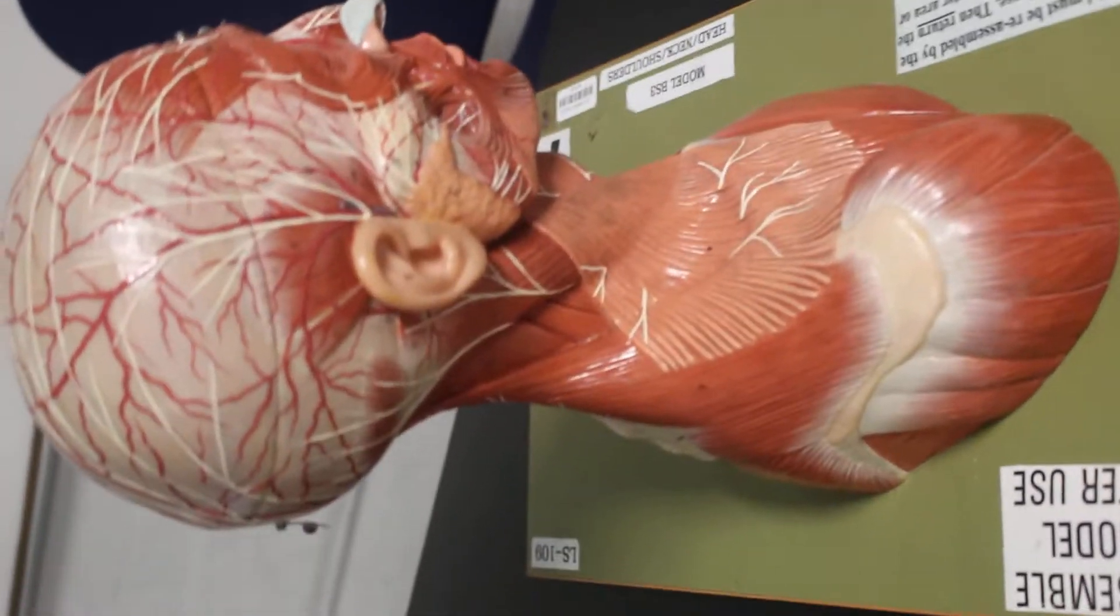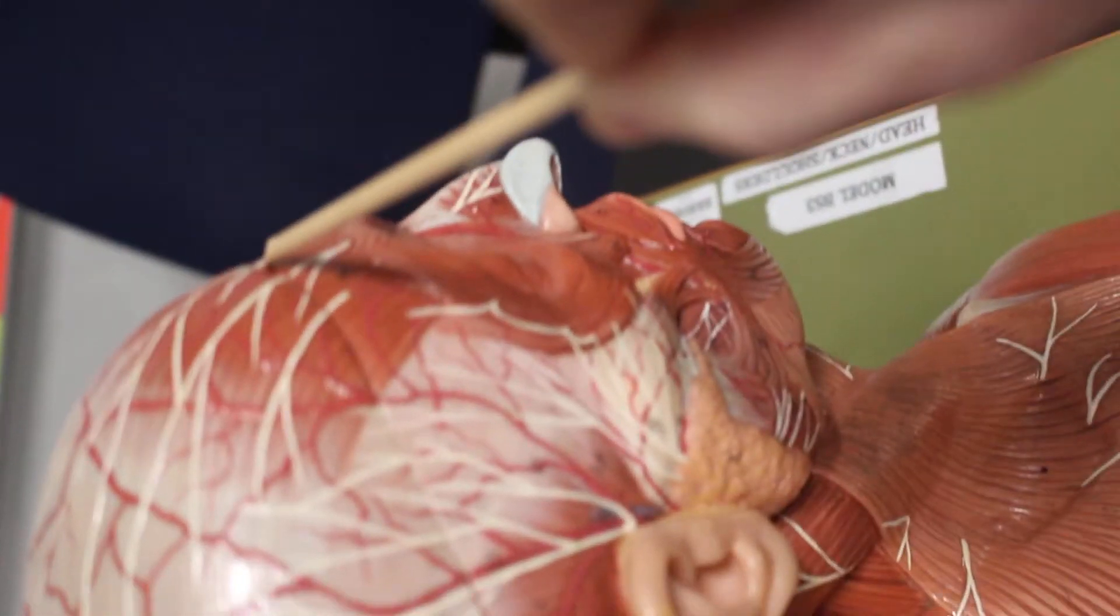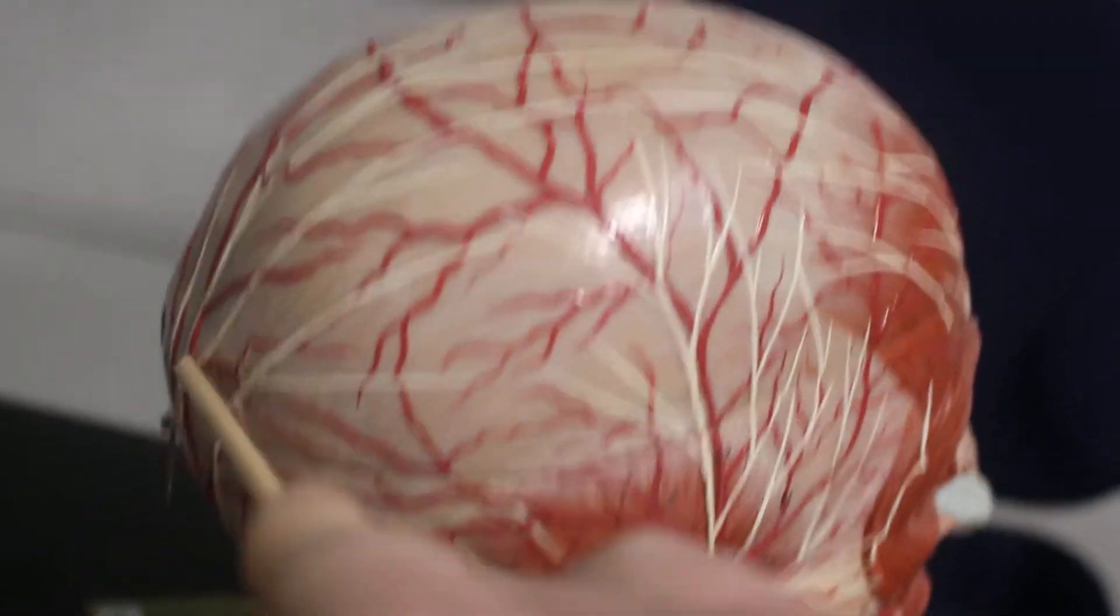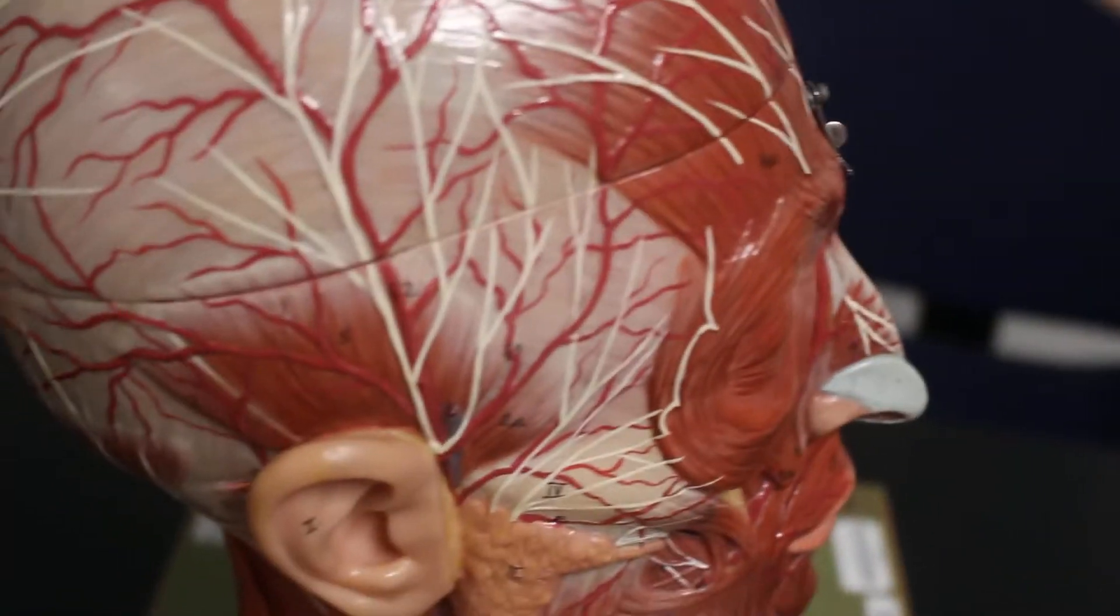This is the Head and Shoulders model. We have the muscle occipitofrontalis. Occipitofrontalis starts in the back of the head and then goes over the top to the front. That is occipitofrontalis.